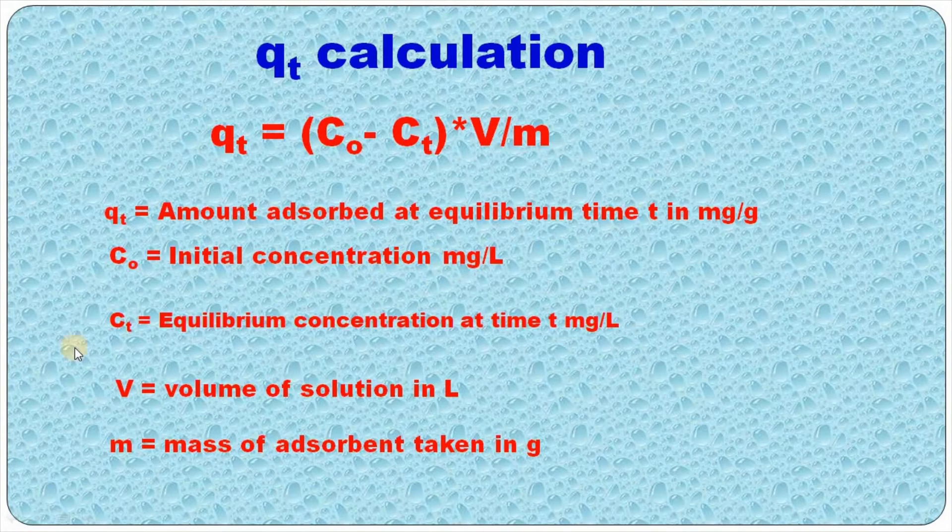C0 is initial concentration, CT is equilibrium concentration at time T, V is the volume of solution in liter, and M is the mass of adsorbent taken in gram. From this, you can easily calculate QT.